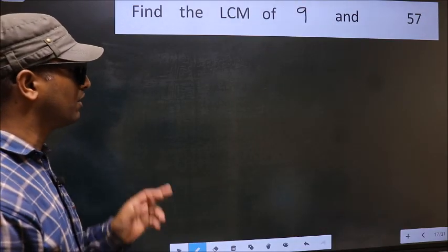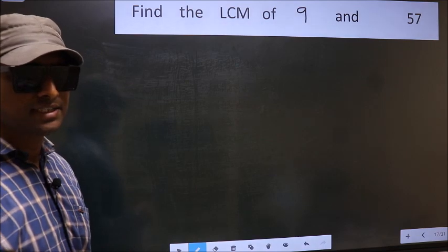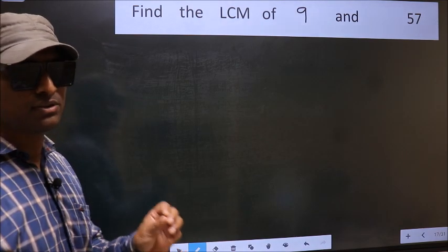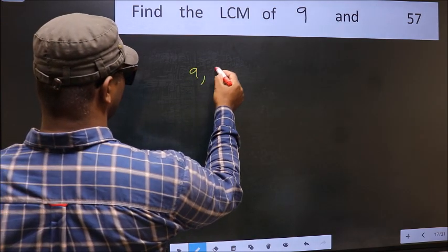Find the LCM of 9 and 57. To find the LCM, we should frame it in this way: 9, 57.